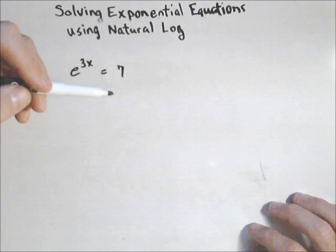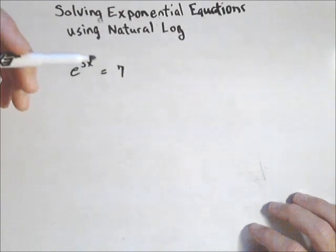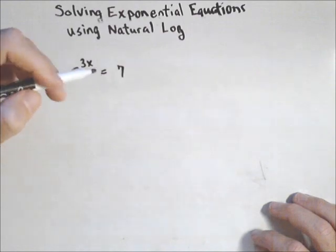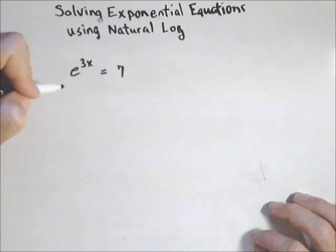If we have a base of 10, we want to use common log. For any other base, you can use any log you want, depending on how you solve. But the only logs we have in our calculator are natural log and common log, so we typically want our answer in terms of one or the other.